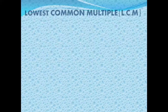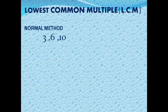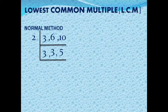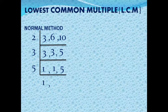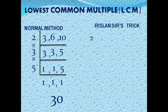Next question: LCM of 3, 6, and 10. Normal method — divide by 2: 3 remains, 6 becomes 3, 10 becomes 5. Divide by 3: 3 becomes 1, 3 becomes 1, 5 remains. Divide by 5: 5 becomes 1. Multiply 2×3×5 = 30. LCM is 30.